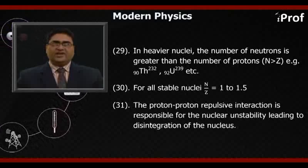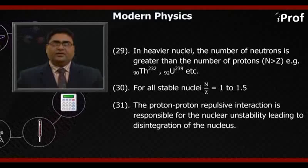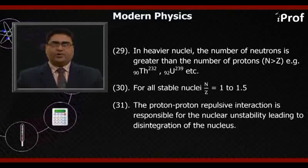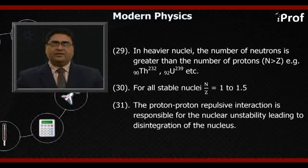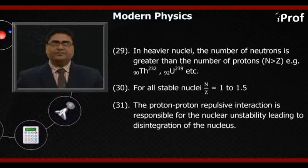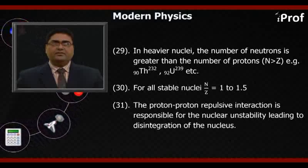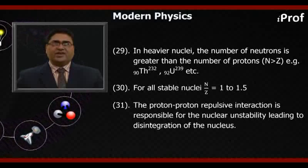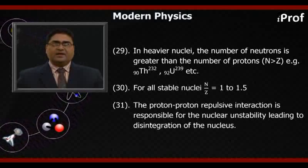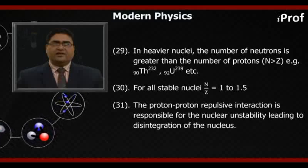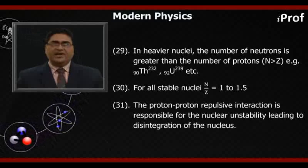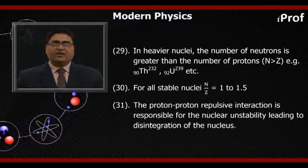Thirtieth, for all stable nuclei, ratio of neutron to proton equals 1 to 1.5. Thirty-first, the proton-proton repulsive interaction is responsible for the nuclear instability leading to disintegration of the nucleus.